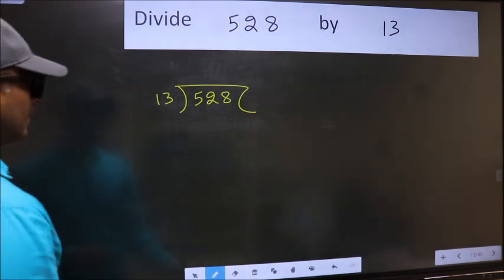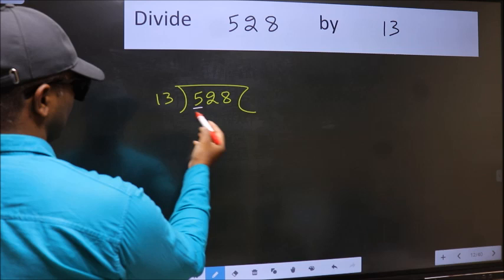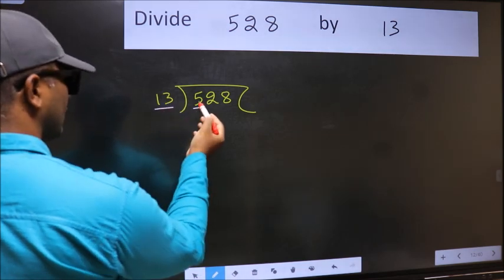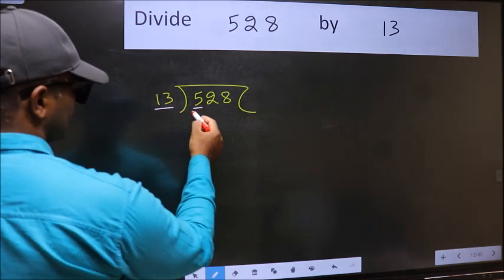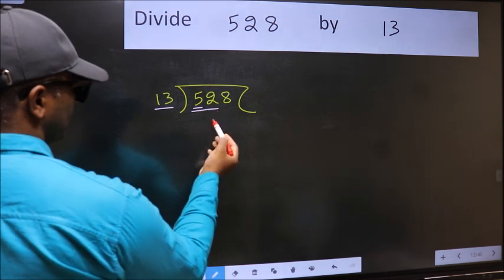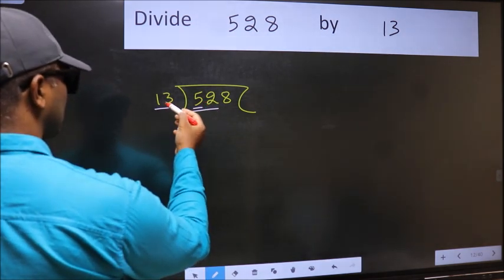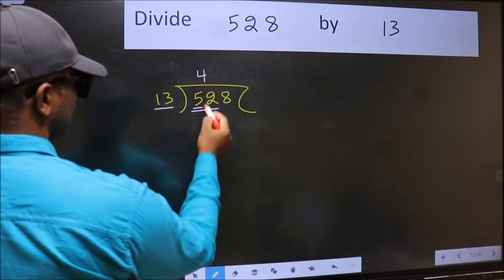Next. Here we have 5 and here 13. 5 is smaller than 13, so we should take two numbers, 52. When do we get 52 in 13 table? 13 fours 52.